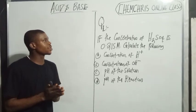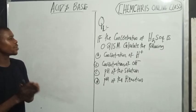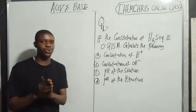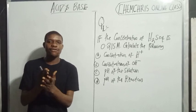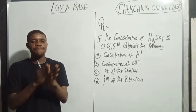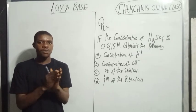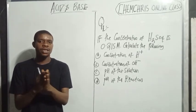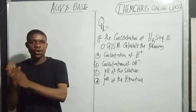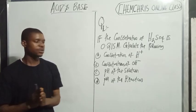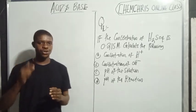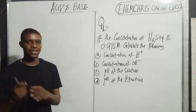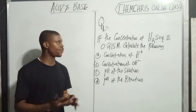Welcome back to the channel. Let's look at the calculation of what acid gamma is. We are going to talk about calculations involving the pH, pOH, and OH⁻ of a strong acid and a strong base.